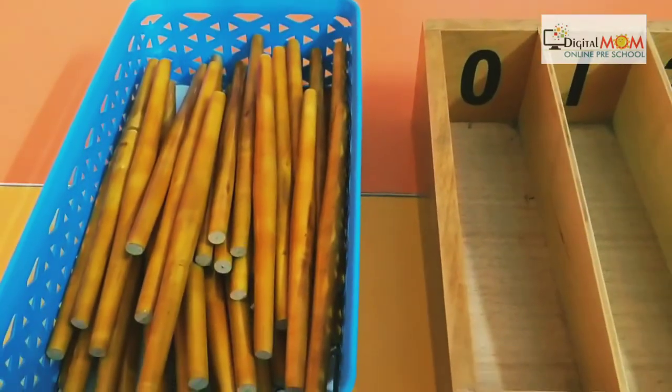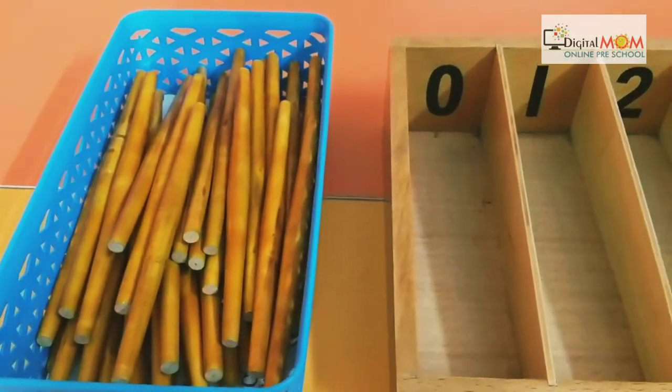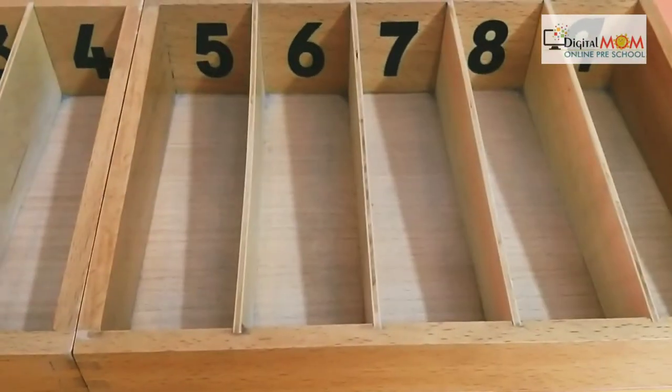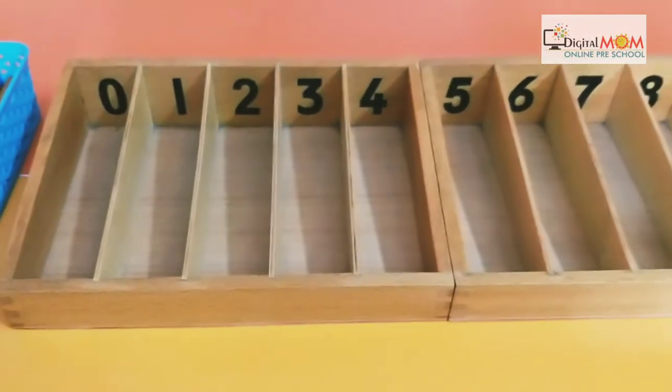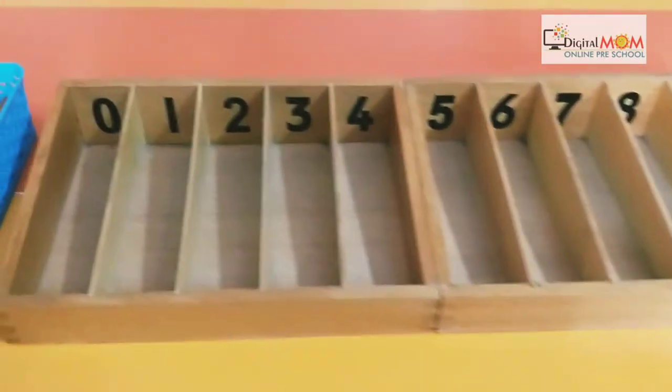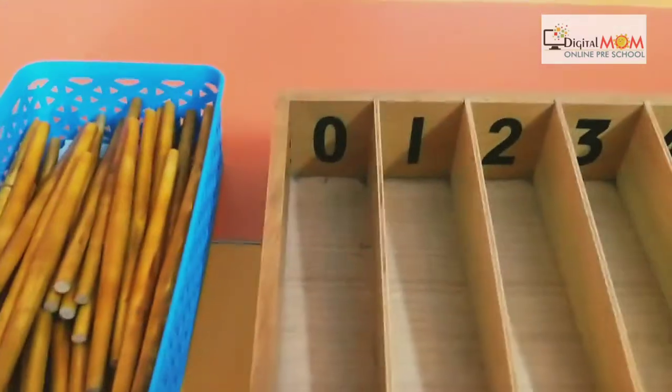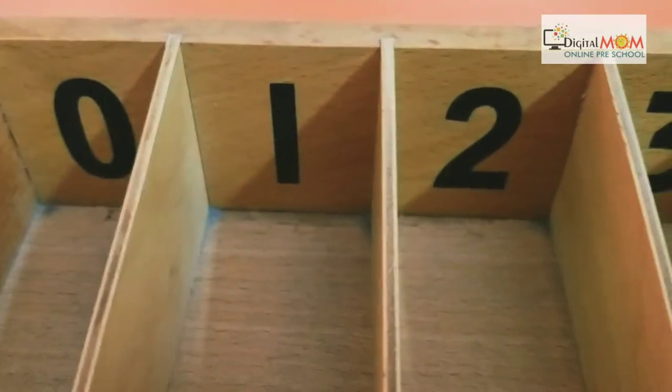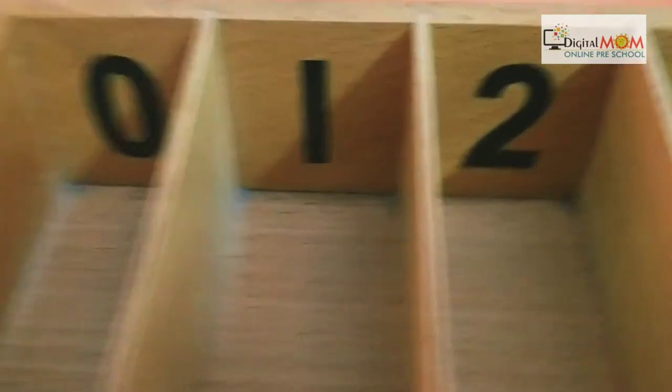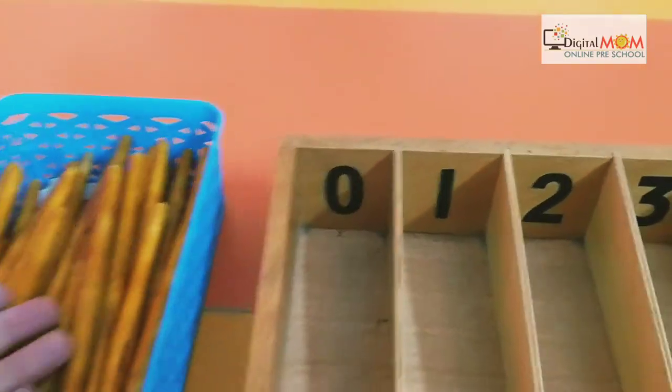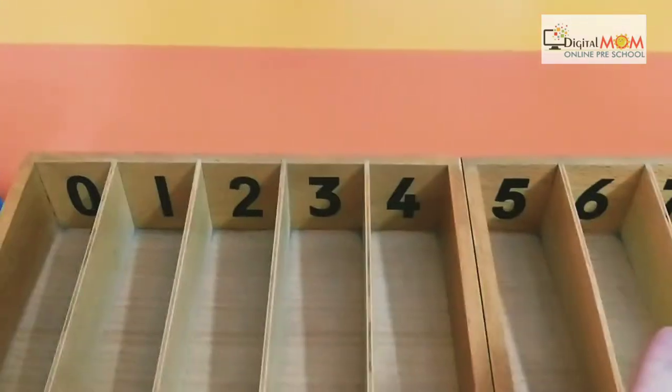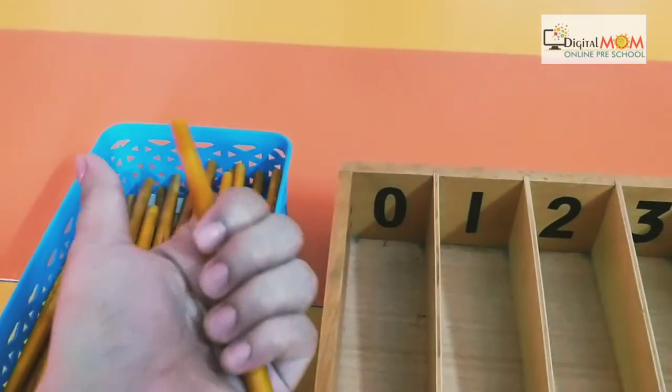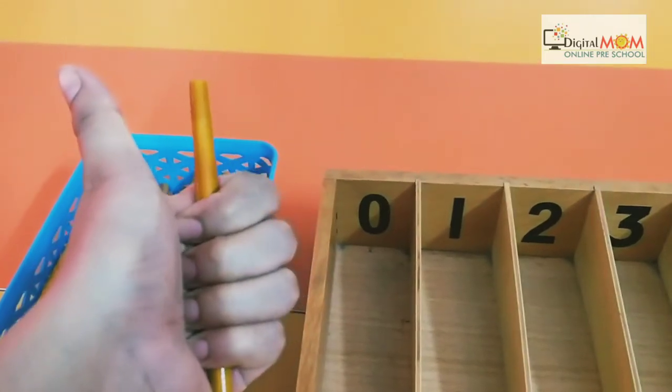So let's start our spindle box activity for quantification. What the child has to do is look one by one at each number. Suppose number one is here - he has to move from left to right, take the spindle from one hand, and hold the spindle like this.